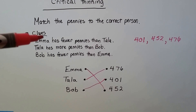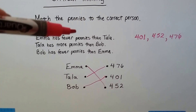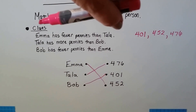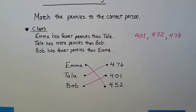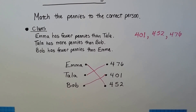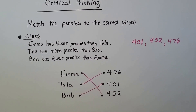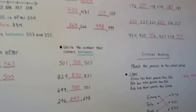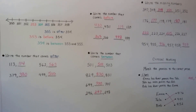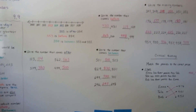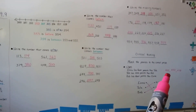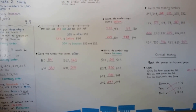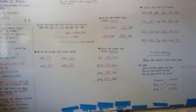You could turn it around: if it says Emma has fewer than Tala, that means Tala has more than Emma. Tala also had more than Bob, so she had more than both other people and had to have the most. We can put numbers in order before, between, or after in counting order — or from least to greatest even if they're not in counting order. We just compare the hundreds, tens, and ones to see which one goes where.